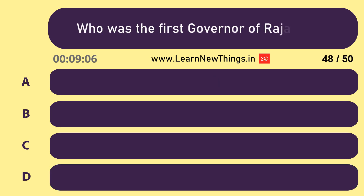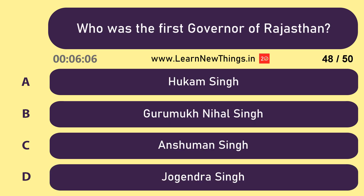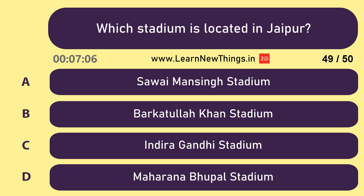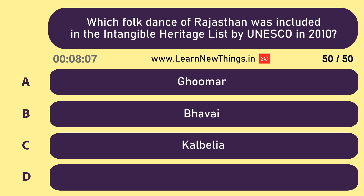Who was the first Governor of Rajasthan? Gurumukh Nihal Singh. Which stadium is located in Jaipur? Sawai Man Singh Stadium. Which folk dance of Rajasthan was included in the intangible heritage list by UNESCO in 2010? Ghoomar.